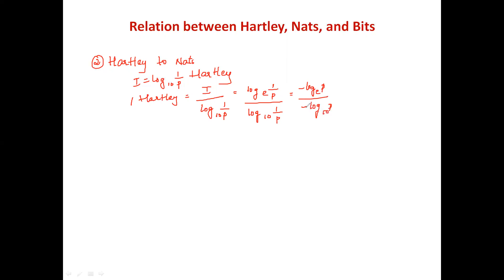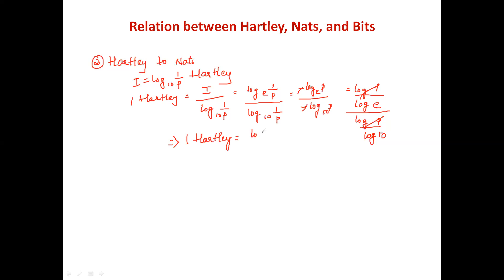Expanding with minus log p: the numerator is minus log p to base e and the denominator is minus log p to base 10. The minus signs and log p terms cancel, leaving log 10 divided by log e, which equals ln(10). Therefore, 1 hartley = ln(10) ≈ 2.302 nats.